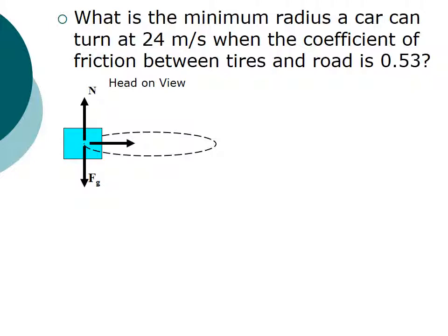And so we want to know what is the smallest possible circle you can turn at 24 meters per second and still make it around the corner without your car slipping. All right, so we're going to draw a free body diagram. As always, we're going to do head-on view because it does show more information in this case. So this is a lot like the last one we did. So there's normal force, force of gravity, and then there's a force inwards.